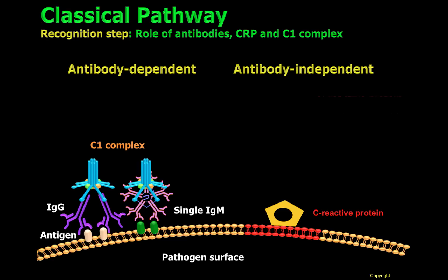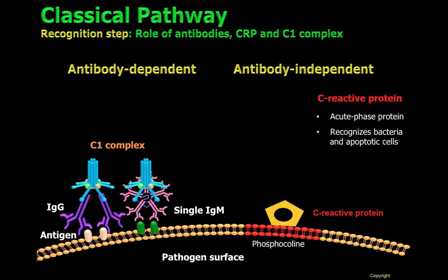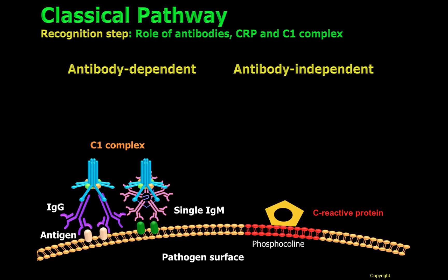CRP is considered an acute phase protein, which means that it is highly produced upon an inflammatory process that occurs, for instance, in bacterial infections and cardiovascular disease, where there is tissue damage. CRP recognizes phosphocholine present on the surface of bacteria and also on the surface of apoptotic cells. CRP is also considered to be an opsonin, which means that CRP will tag pathogens for destruction by a process called phagocytosis. When CRP is bound to the cell surface, the C1-Q complex can also recognize it.